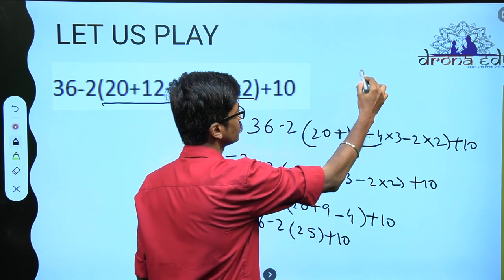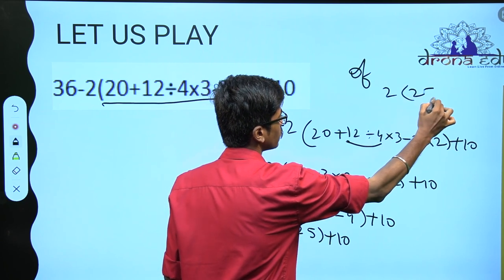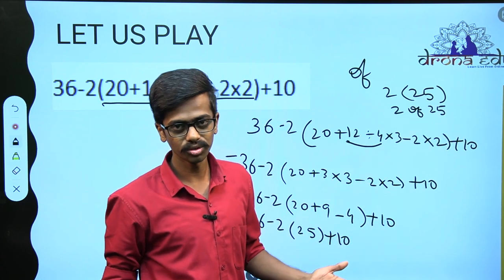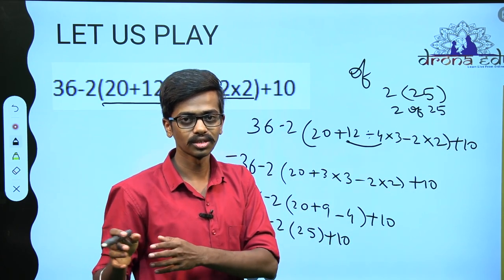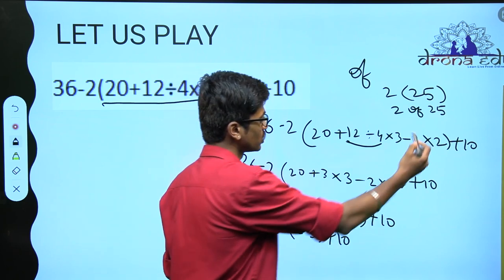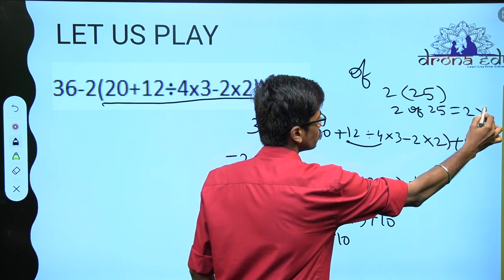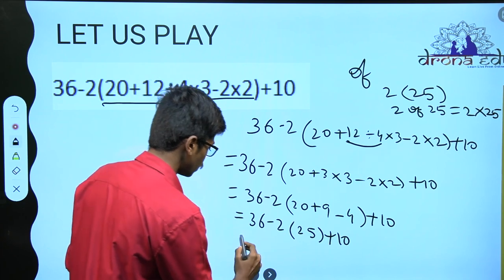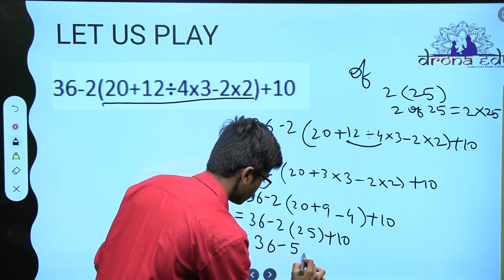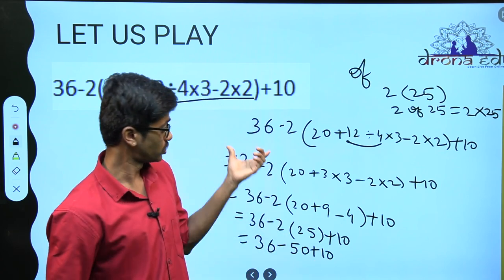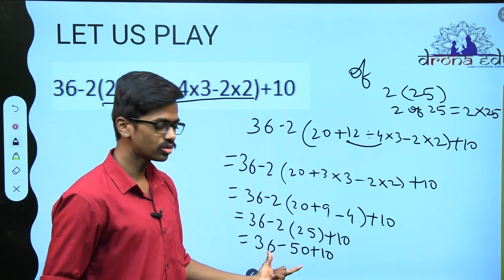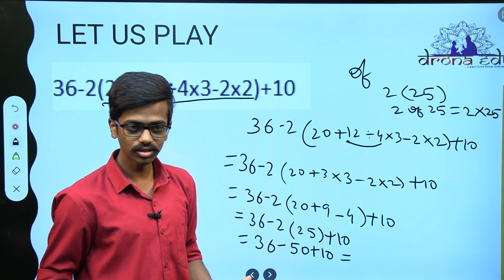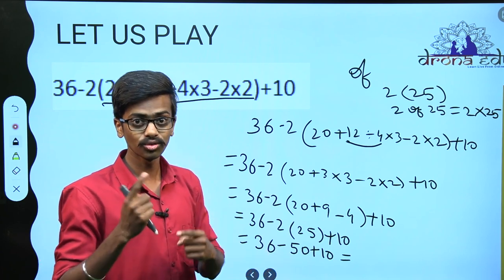36 minus 2 into — what is 9 minus 4? 5. What is 20 plus 5? 25. So you have 25 plus 10. Now if there is a number outside the bracket without any symbol, it means that it is 'of,' so it means 2 into 25 is nothing but 2 of 25. What is 5 percent of something? You do 5 percent into something — same thing here. So it is 2 into 25, what is 2 into 25? It is 50. So I will just write it down: 36 minus 50 plus 10. This whole huge line of numbers became just 3 numbers. Make use of what you know about integers and solve it.